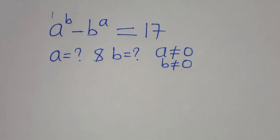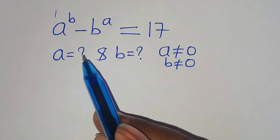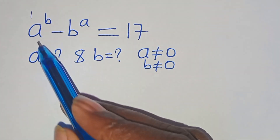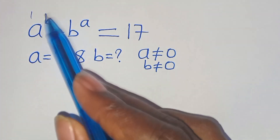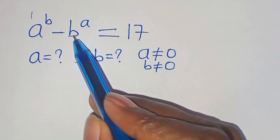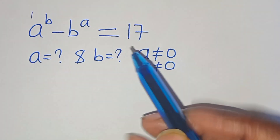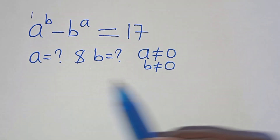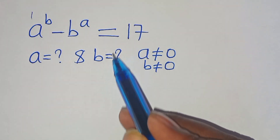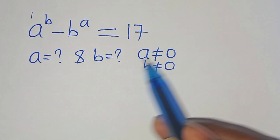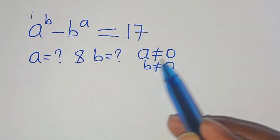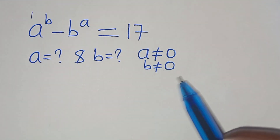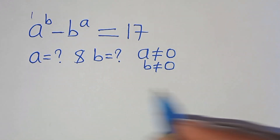Hello everyone, you are welcome to solve this nice algebra problem: a to the power of b minus b to the power of a is equal to 17. What is the value of a and what is the value of b, given that a is not equal to 0 and that b is not equal to 0?